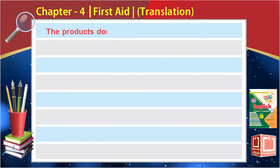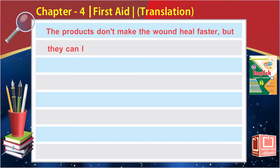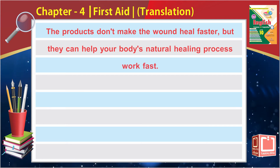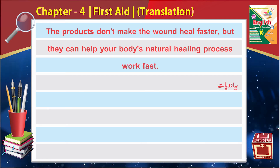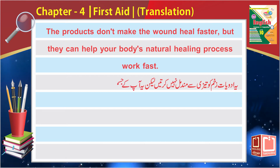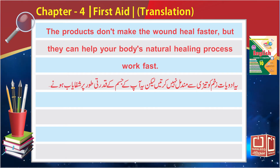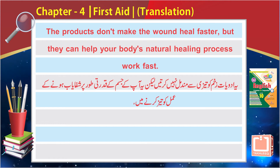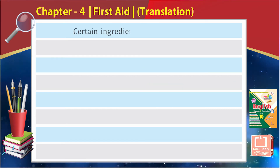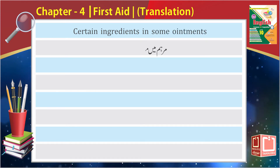'The products don't make the wound heal faster, but they can help your body's natural healing process work fast' — yeh adwiyaat zaham ko tezi se mundamil nahi karti, balkeh yeh aap ke jism ke qudrati tor par shifa yaab hone ke amal ko tez karne mein madad kar sakti hain. 'Certain ingredients in some ointments' — ointment mein maujood kuch makhsoos ajzaa hote hain.